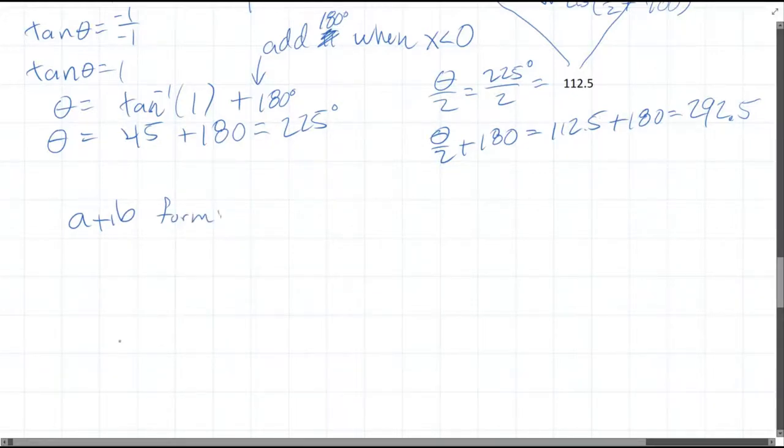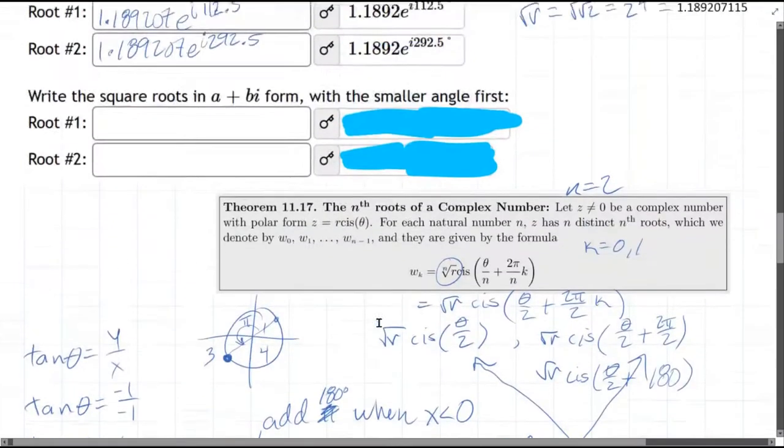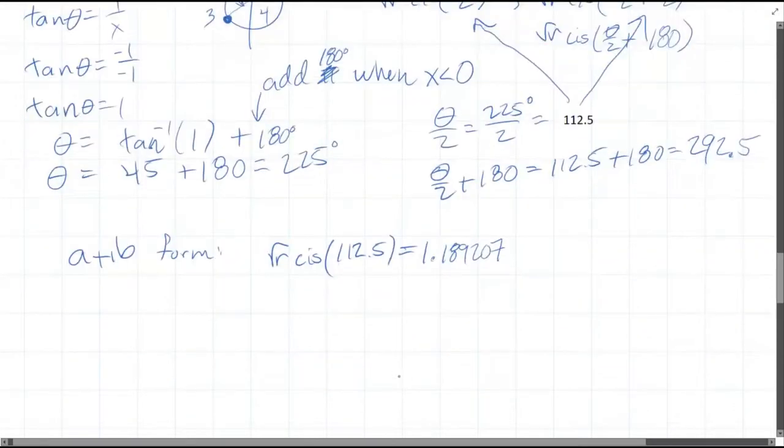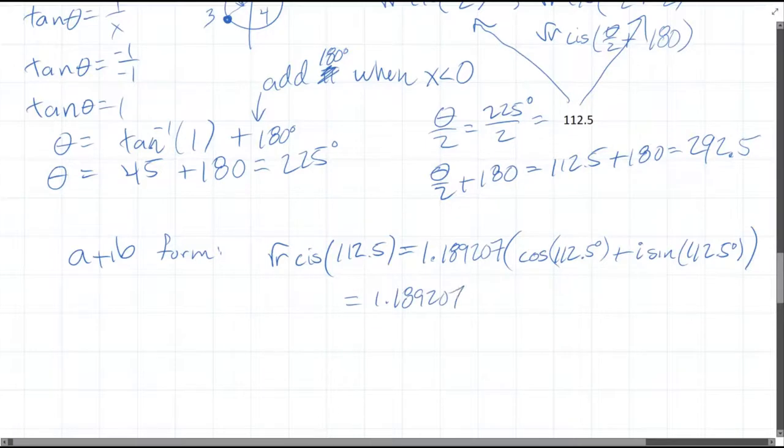So in this one, we actually compute the cosine i sine, and we had 112.5. So what this actually is, well first of all we have that 1.189207. Now what is cosine i sine? That's cosine 112.5 plus i sine 112.5. And you distribute this to each part here, and I'll bring the i out front.